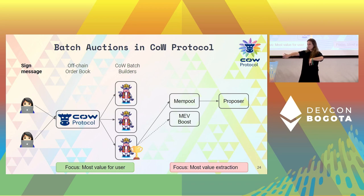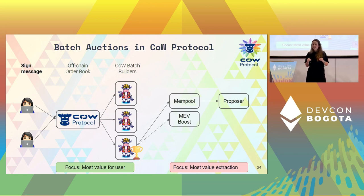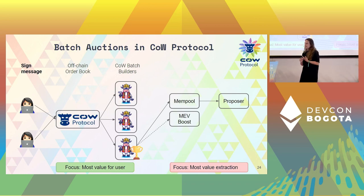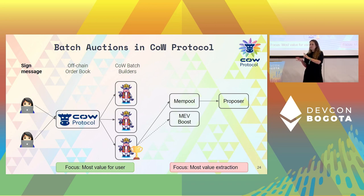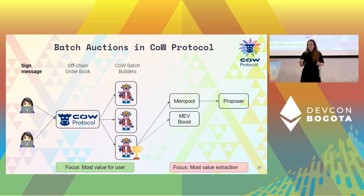The cow batch builders find the optimal solution and then submit on-chain. They can submit directly to the public mempool or via a relay if they want additional MEV protection. At that point in execution, if they are front-run or sandwiched, the batch builder bears that cost — not the user. The user is already protected by the price the cow batch builder committed to winning the competition with, so that price is guaranteed for the user.